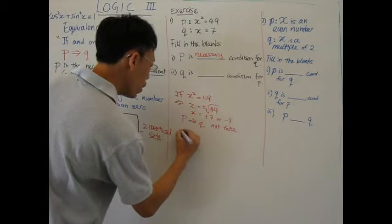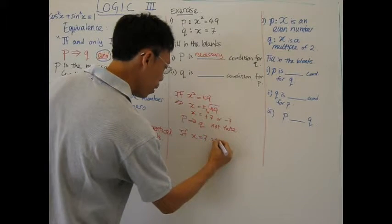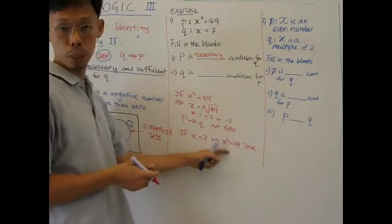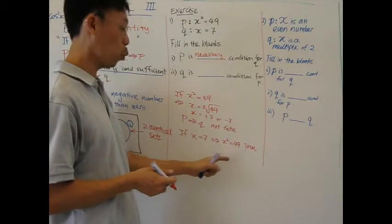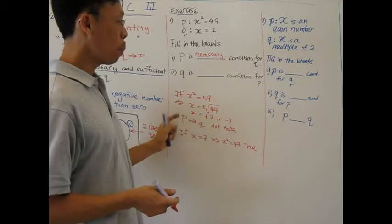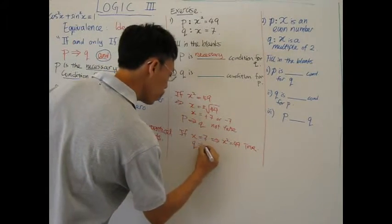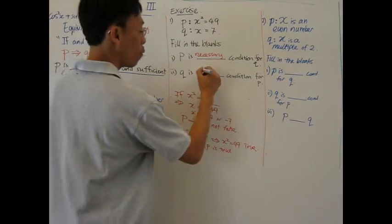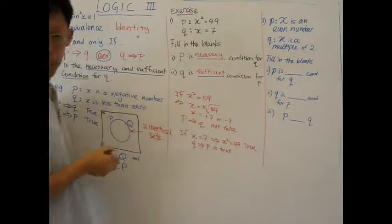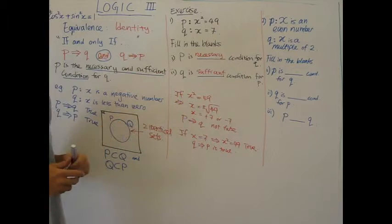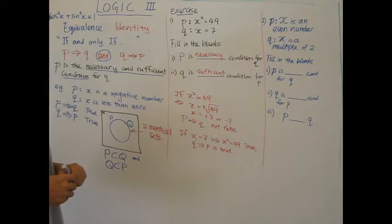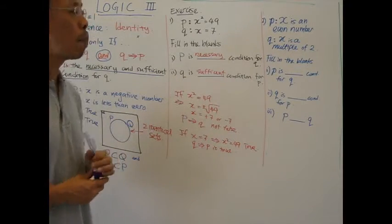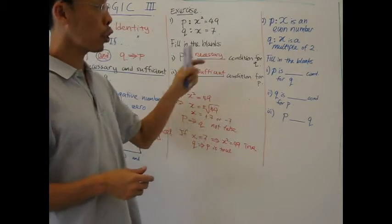What about Q? If you know x equals 7, then x squared equals 49. This is a true statement. Because this implication is true, Q is a sufficient condition for P. Did you get that right? If not, review this video once more. Try question number 2. You might want to redo your question number 2 now or just resume the video. X is an even number, P says x is an even number, Q says x is a multiple of 2.